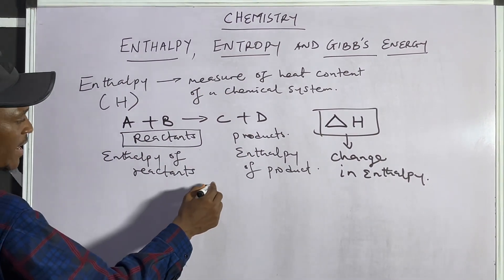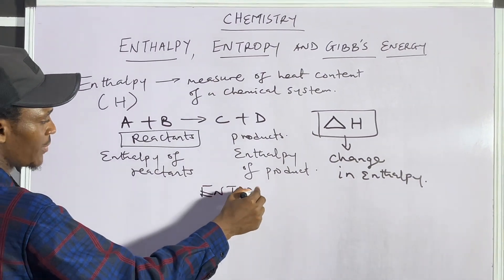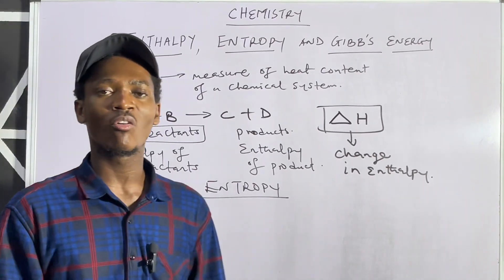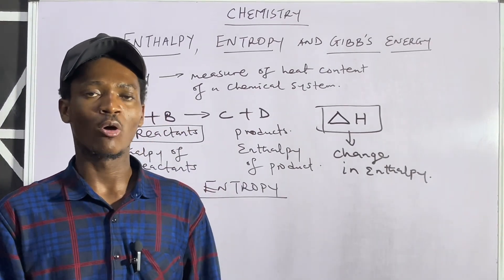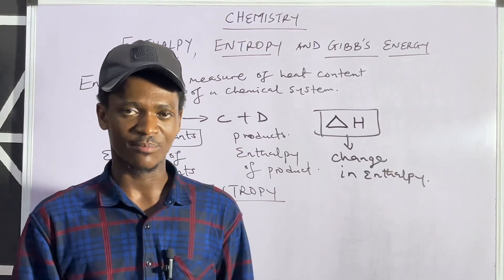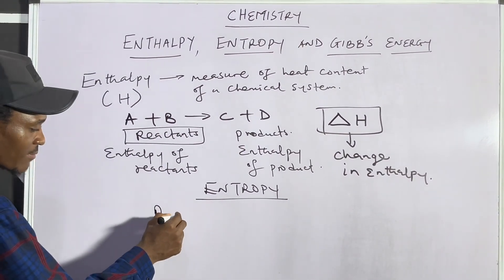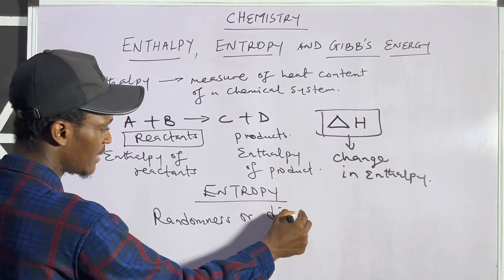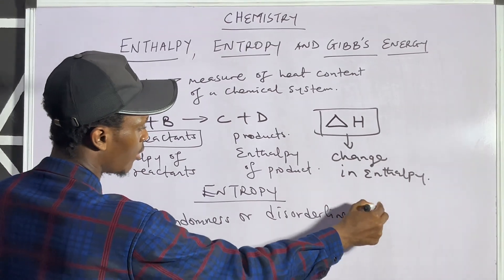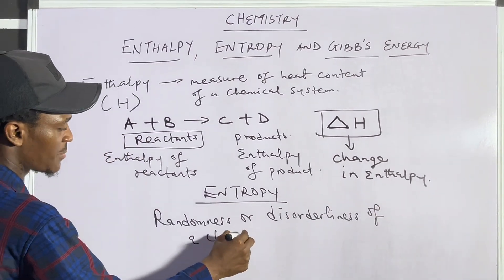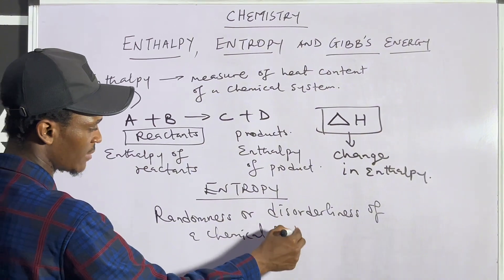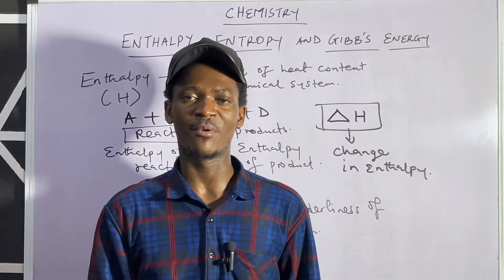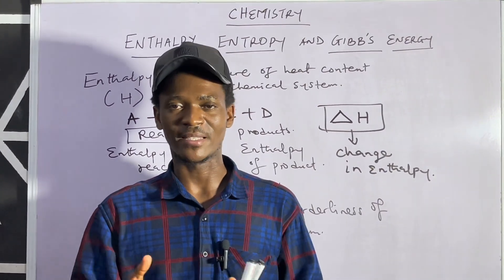The next is entropy. What is entropy? Entropy simply is the measure of the randomness or disorderliness of a chemical system — the measure of randomness or disorderliness of a chemical system. Please pay attention to what I'm about to explain with regards to this.